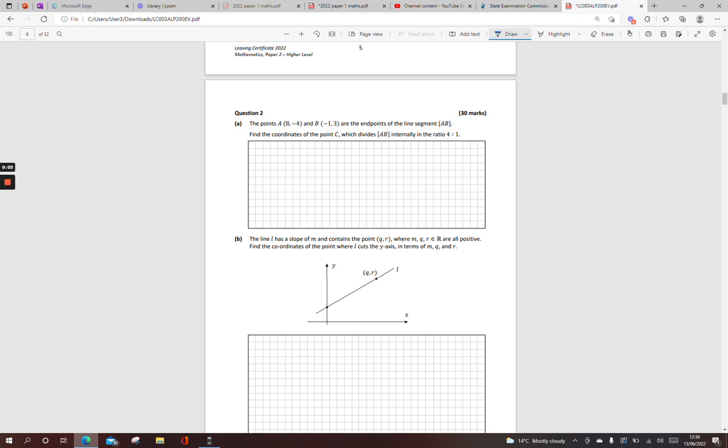So, 2022 coordinate geometry of the line question. Here we're given two points, and they're the endpoints of a line segment. We've got two points, A and B, and they're the ends of a line segment.